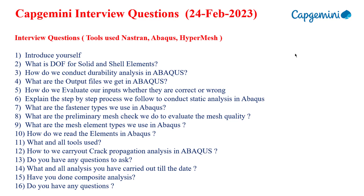Try to memorize and explain the static analysis process clearly. The next question is: what are the fastener types used in Abaqus? There are multiple fasteners — single-point fasteners and others — so pick up more about Abaqus fastener types. The next question is: what are the mesh quality checks we do to evaluate mesh quality? These include skewness, aspect ratio, Jacobian points, and Jacobian ratio. The next question is: what are the mesh element types used in Abaqus? For shell elements, types like S4, S8 are used; they will ask about quadratic elements, first order, and second order.